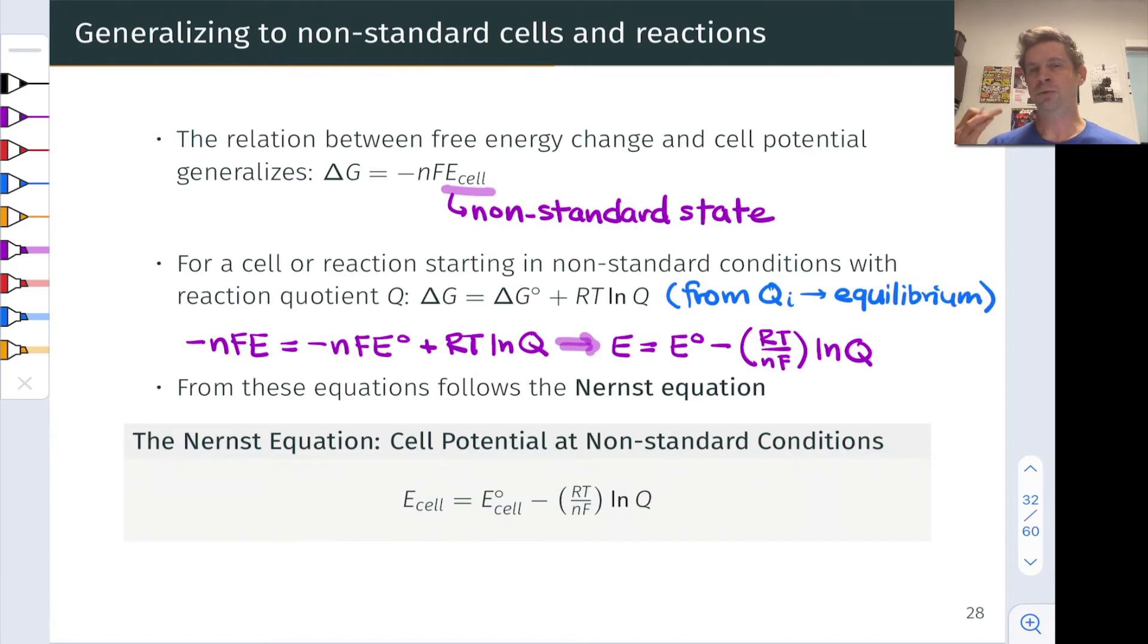As Q varies from the standard value of 1 the cell potential will go up or down depending on whether Q goes up or down and the way that works is as Q increases we'll think back to our fundamental equilibrium concepts. As Q increases that means we're adding product. This will tend to push the cell potential down because in many ways we're making the redox reaction less spontaneous by piling on products, right?